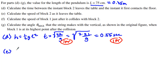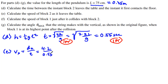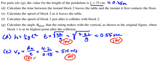Part E asks for the speed of block two as it leaves the table. The horizontal distance is 4L, so velocity in the x-direction equals displacement over time: 4L divided by 0.55 seconds. Plugging in L = 0.75 gives 5.4 meters per second. One point for the kinematics equation, one point for the answer — two points for E.